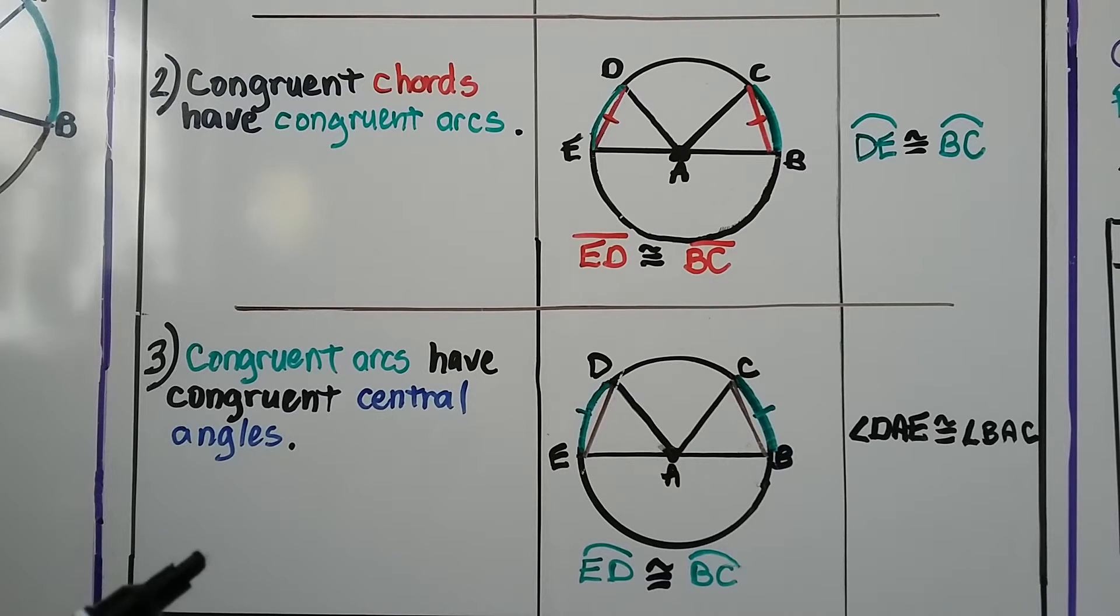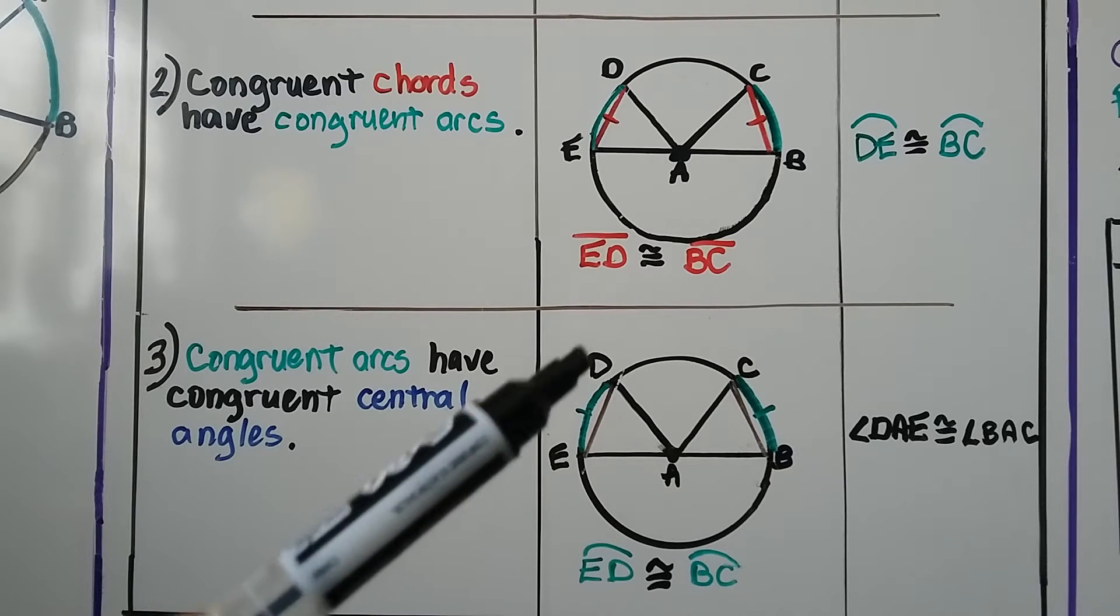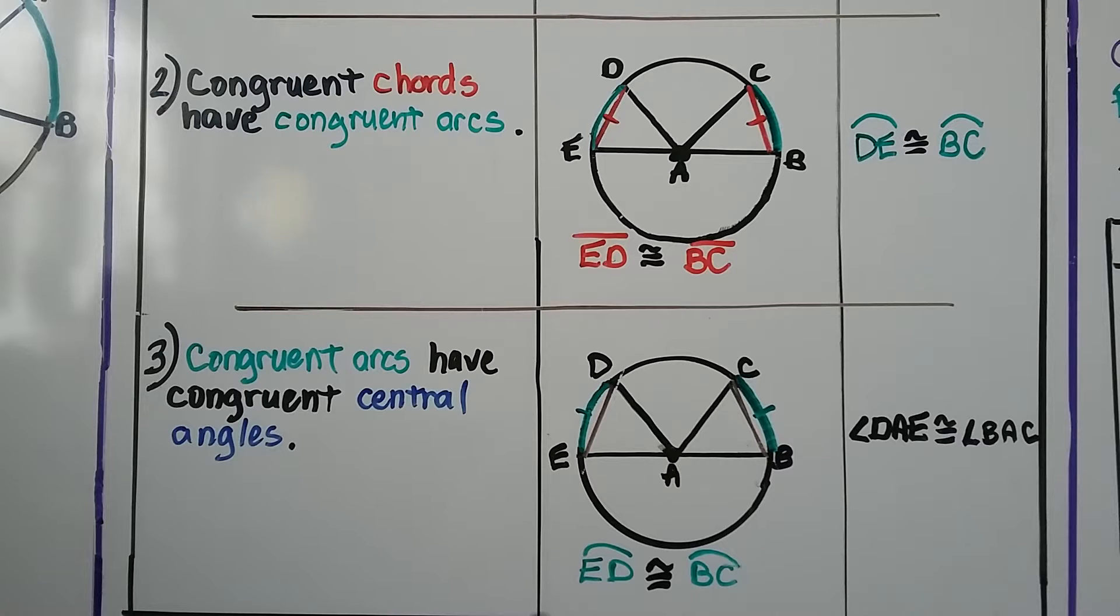And the third part of the theorem says congruent arcs have congruent central angles. So arc ED, right here, is congruent to arc BC, right here. So our conclusion is that angle DAE, this angle right here, is congruent to angle BAC. If you think about it, these are all connected, aren't they?